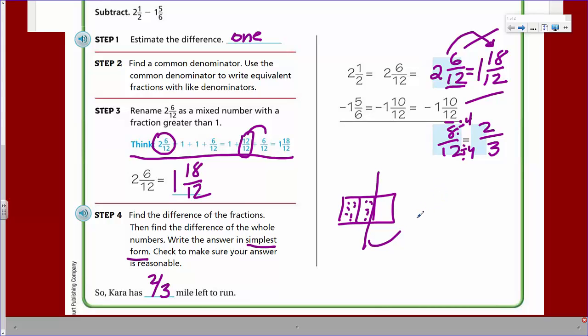We could always go back and check our work because 2/3 then, if we add that to the 1 5/6, that should get us back to the 2 1/2, the original number. And here we get ourselves a common denominator again. We already had 12 and then that should work out. I'm going to stop at that. I'm not going to actually figure that out, but you get the idea. All right.